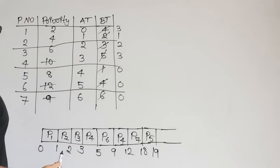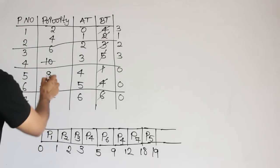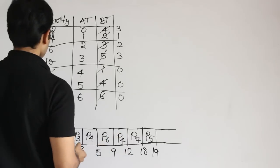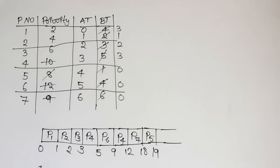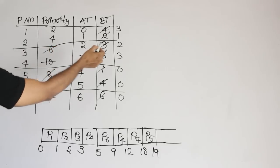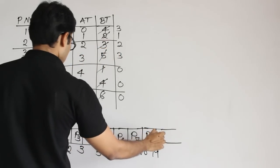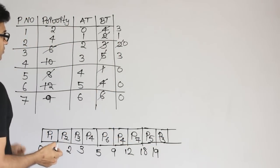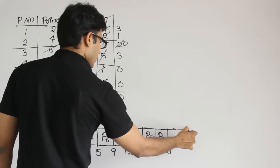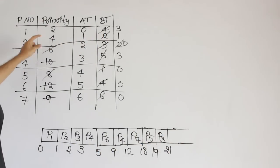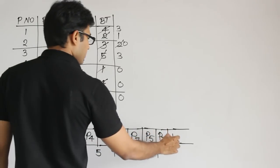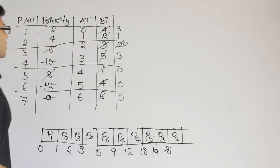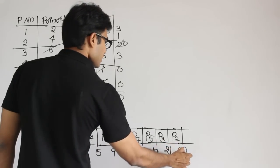In the remaining processes, the next highest priority is 6, which is P3. Its remaining burst time is 2, so schedule P3 and run for 2 units — it finishes at 21. After that, among the remaining we have priorities 4 and 2. Take P2, whose remaining burst time is 1, and run it for 1 unit — it completes at 22.